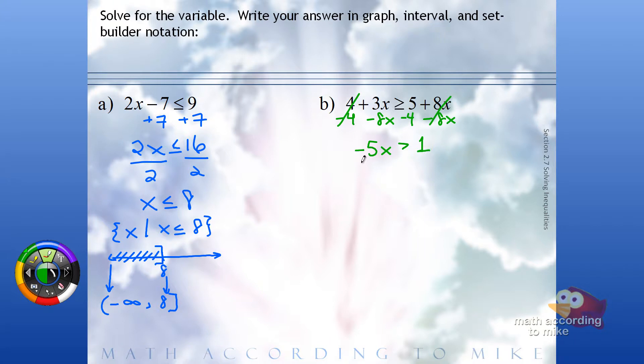But to finish solving for x, we need to divide by negative 5. Since negative 5 is negative, we have to flip the sign of the inequality.